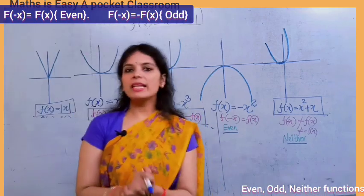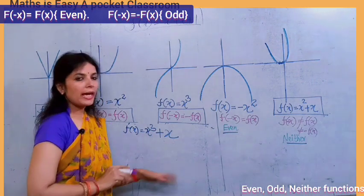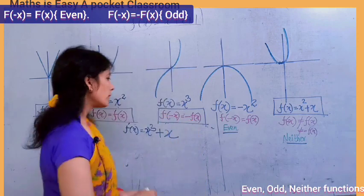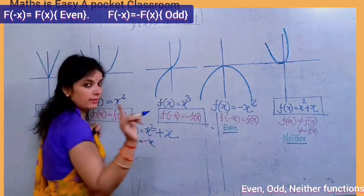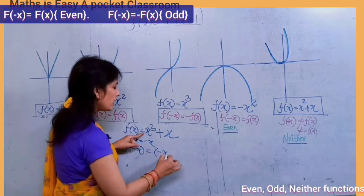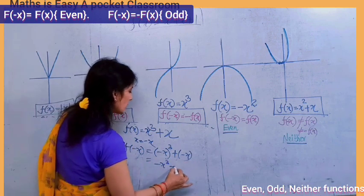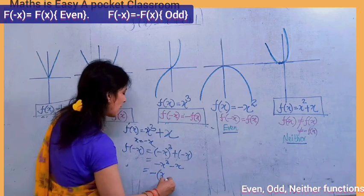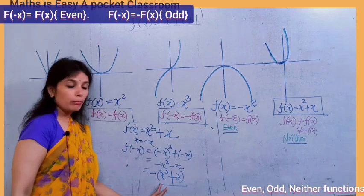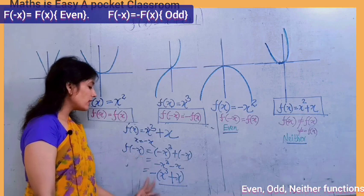Now let's see mathematically how to determine whether a function is even or odd. Suppose we have f(x) = x³ + x and we have to prove whether it is even or odd. What we do is put x equal to minus x in the function. So f(−x) = (−x)³ + (−x) = −x³ − x. We can factor out the negative sign, giving us −(x³ + x).